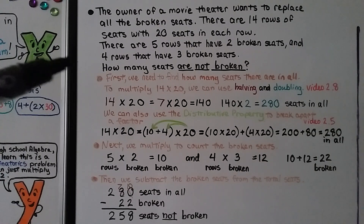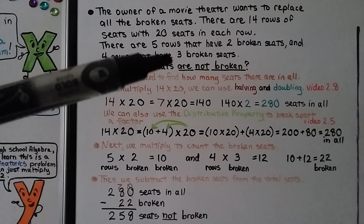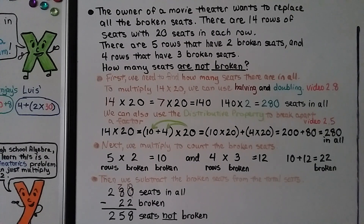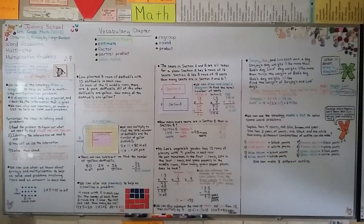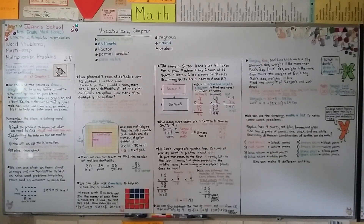It's really important to notice the problem asked how many seats are not broken — when we do word problems, we want to make sure we're answering exactly what it asked. In our next lesson, 2.10, we're going to learn how to use regrouping to multiply a two-digit number by a one-digit number. This is how your parents learned to multiply. I hope I'll see you there — keep trying to do better every day!